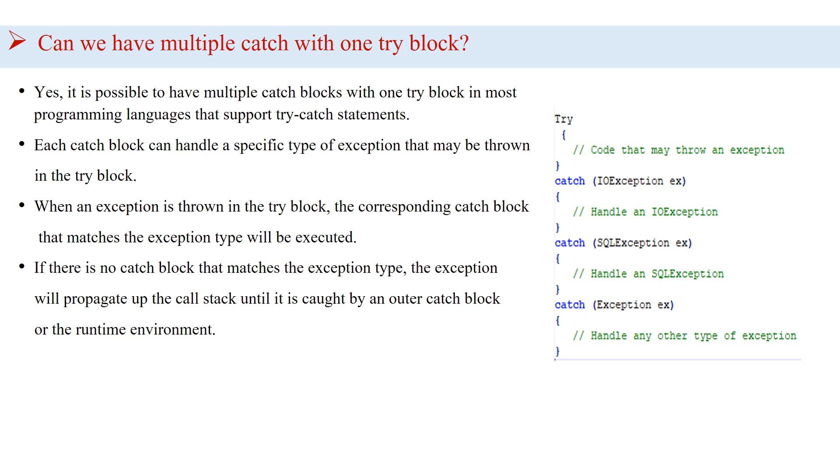When an exception is thrown in the try block, the corresponding catch block that matches the exception type will be executed. And if there is no catch block that matches the exception type, the exception will propagate up the call stack until it is caught by an outer catch block or the runtime environment.